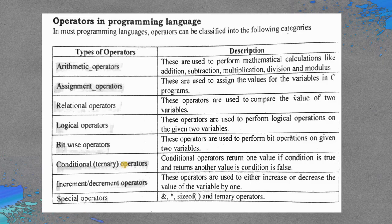The increment and decrement operator is a unary operator — double plus and double minus are the increment and decrement operators respectively. The special operators are the ampersand (&), star (*), and sizeof. The ampersand signifies the address of a variable, the star denotes pointer variables in C, and sizeof gives you the size of any variable, array, or string.